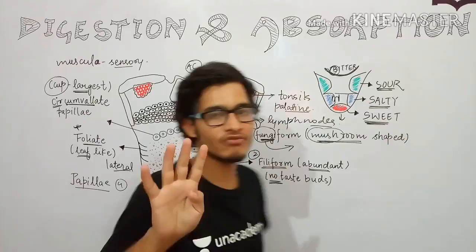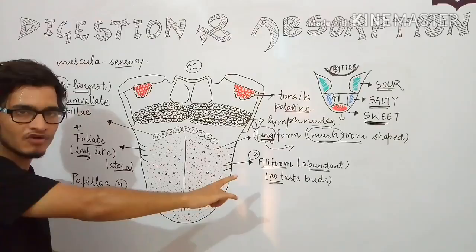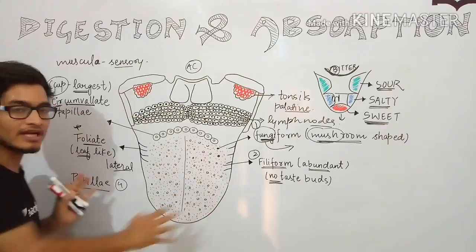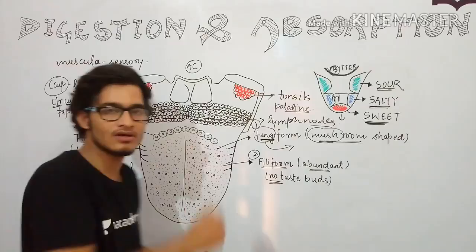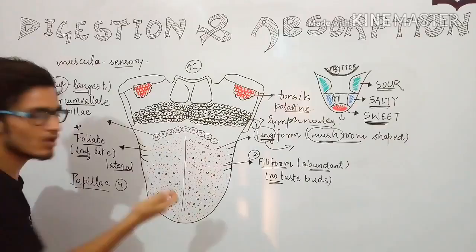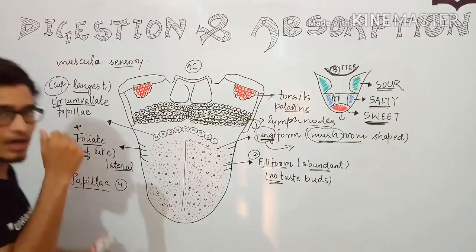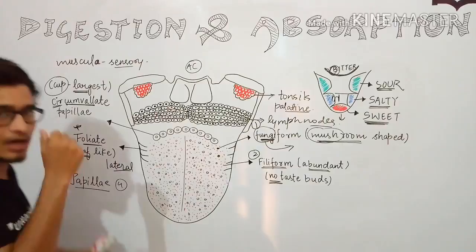You need to memorize all four types of papillae present in the human tongue: fungiform, filiform, circumvallate, and foliate. Remember their shapes — foliate means leaf-like, fungiform means mushroom-like because mushroom is fungal. Filiform are very small but most abundant. Circumvallate are the largest and round in shape. These are important points from an examination point of view.